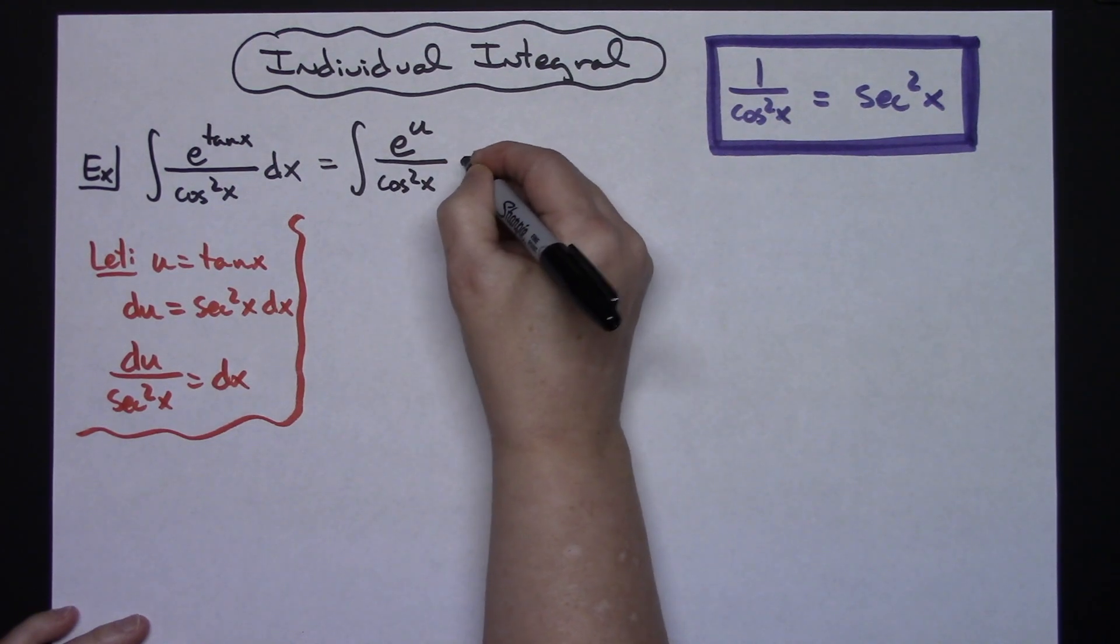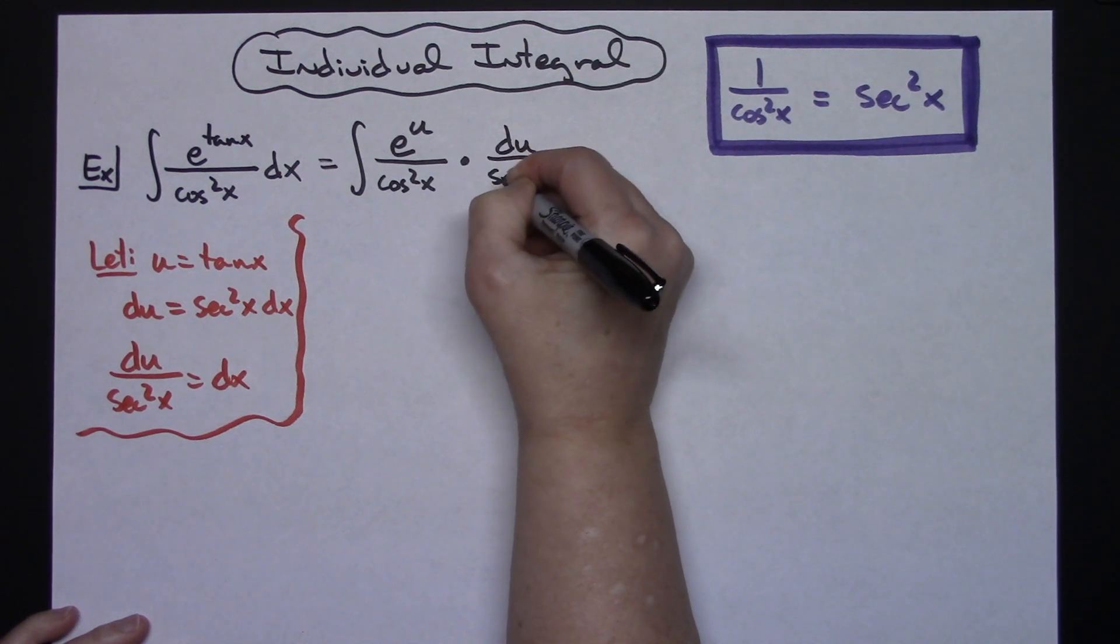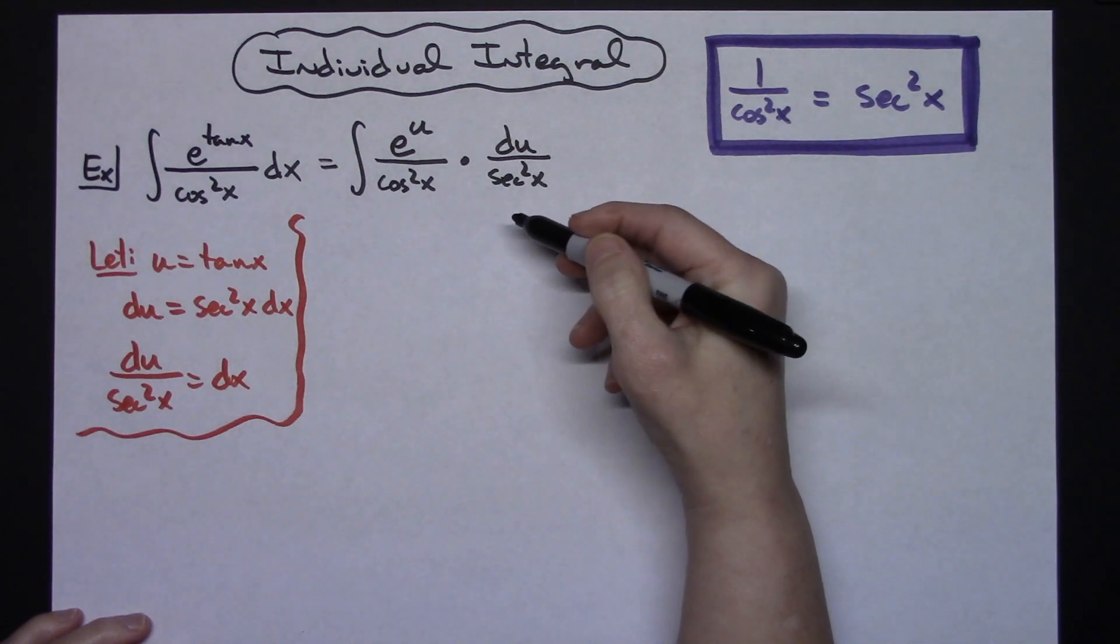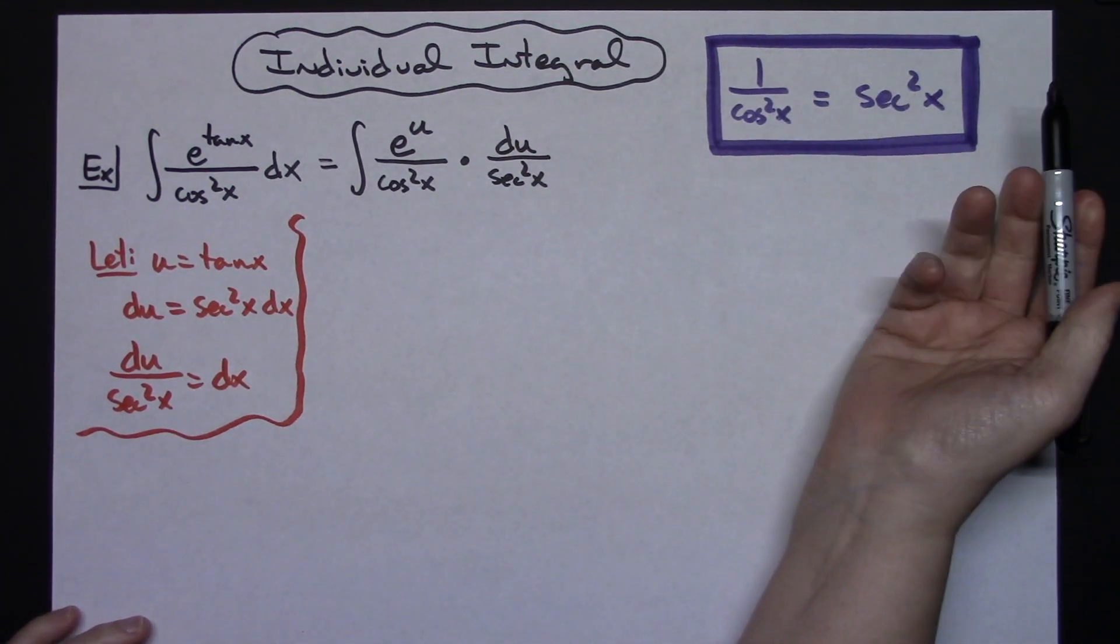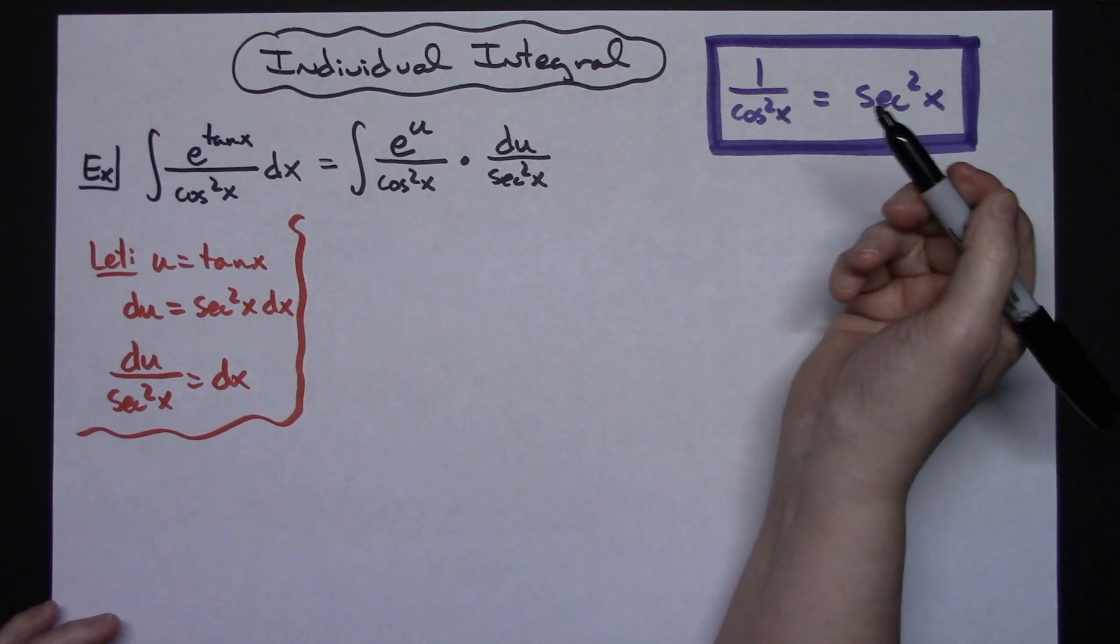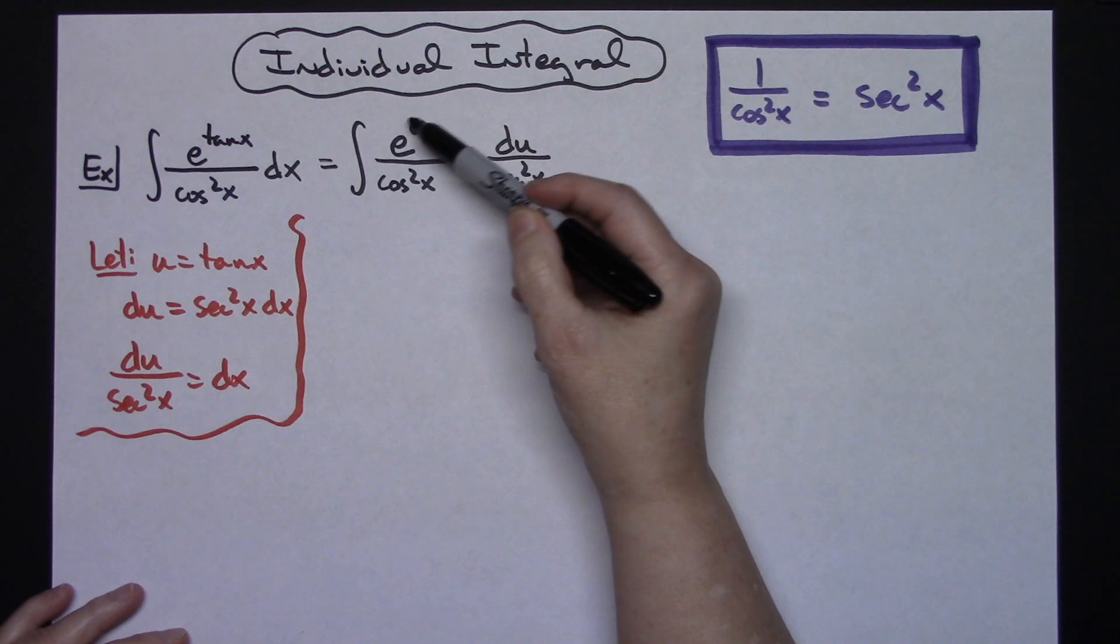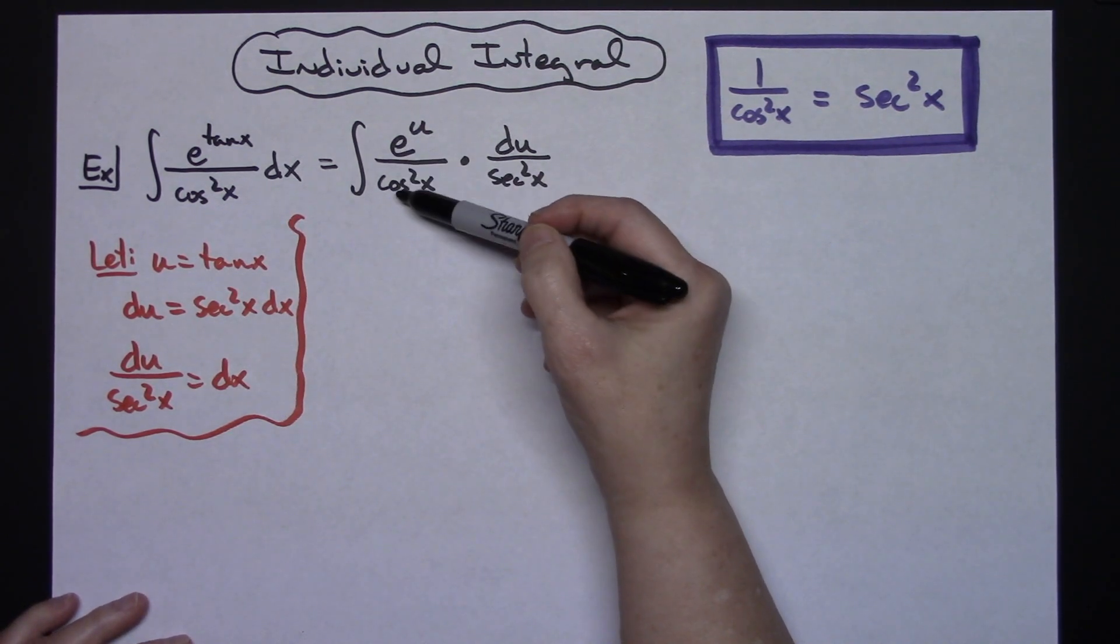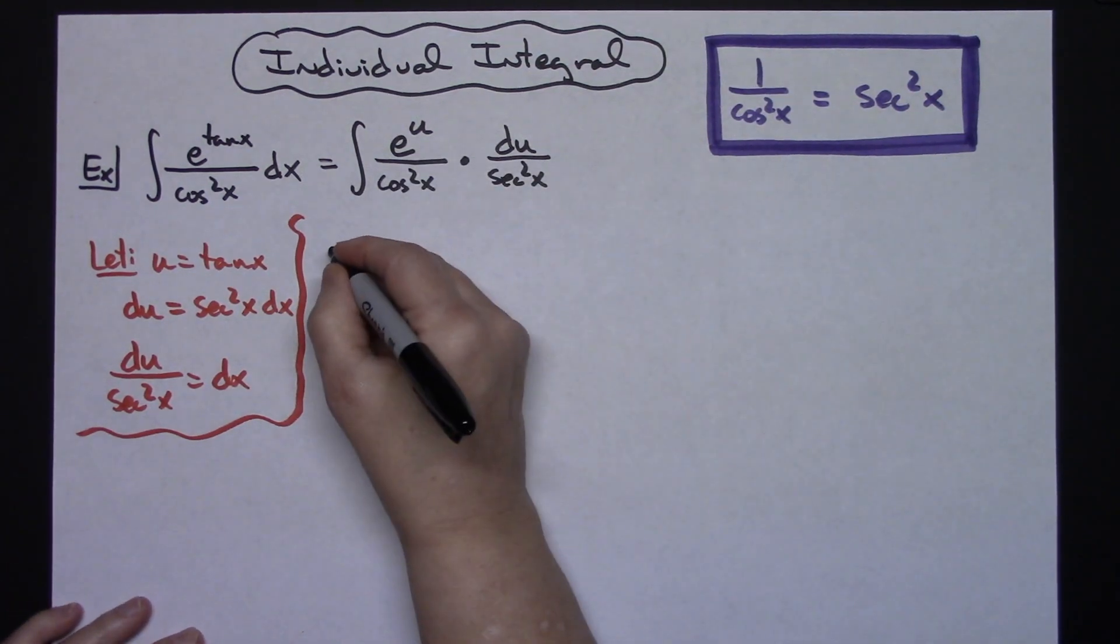I will replace dx with what it equals, du over secant squared x. Now at this point if you are not recognizing that you're going to have to do this trig substitution, that's what creates the problem for some people. Looking at it like this it might make it a little more difficult to see. So I'm just going to separate that so people can see why I can make the substitution.